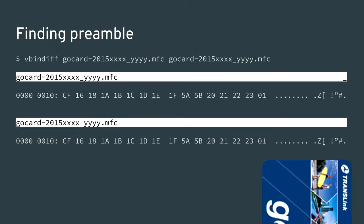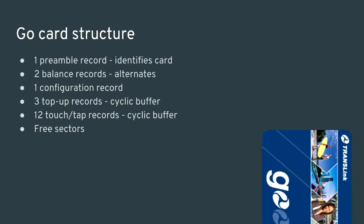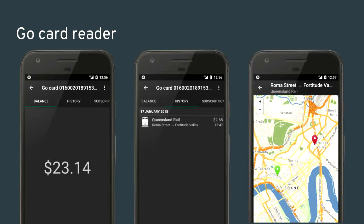The fare is little-endian — if the highest bit is set it is a debit, otherwise a credit. The card has no formal structure, so I needed a way to identify Go cards from every other MIFARE Classic card. At the start of each card was a magical data constant present on every Go card, followed by what I think is a system identifier. In summary: a preamble record to identify the Go card, balance records that alternate, a configuration record with ticket type and expiry, top-up records, and 12 touch-on/touch-off events that rotate through automatically containing times and station IDs. Now the app can read them too, once you install the appropriate encryption keys.